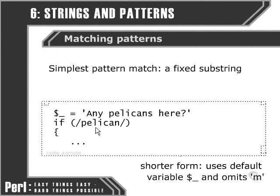We can also leave out the M at the beginning of the pattern. There are instances in which we'll need to use the M — for instance, if we wanted to use any character other than a forward slash for demarcating the pattern. The vast majority of the time though, we can leave it out. Here is a very concise form of testing the regular expression against the larger string. The if block here will only be carried out if the substring pelican is found within the larger string.